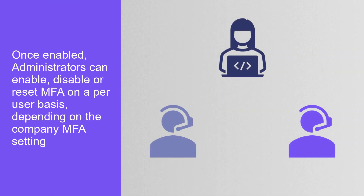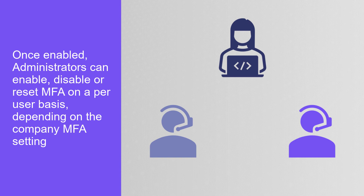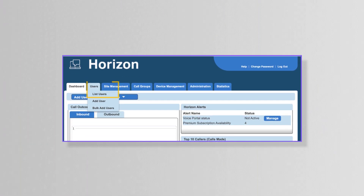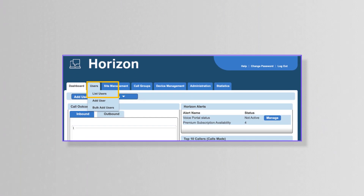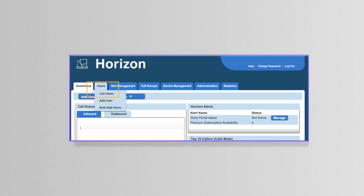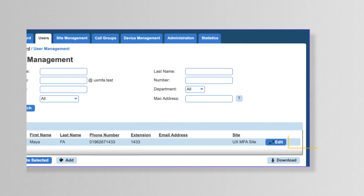Once MFA is enabled at a company level, administrators will gain the ability to enable, disable, or reset MFA on a per-user basis. This is done via the Edit User section in the Permissions tab for voice users.